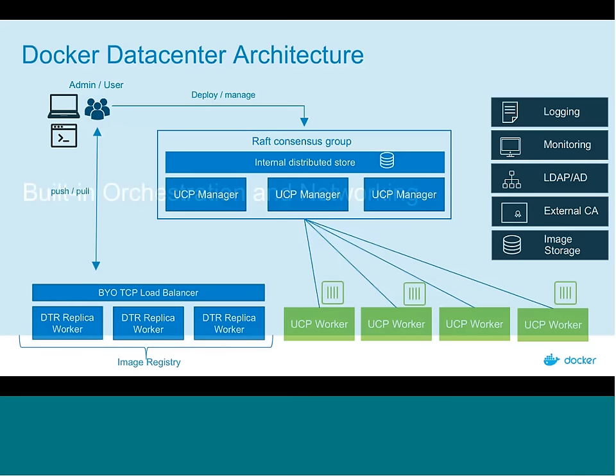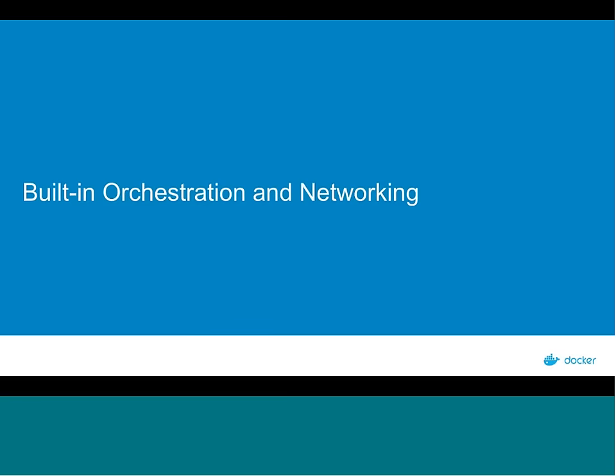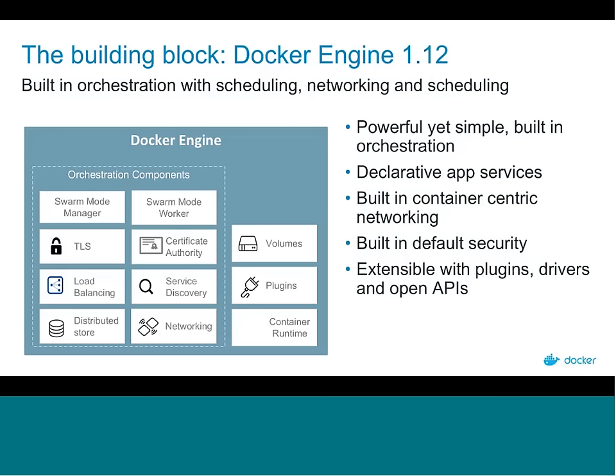The building block of the newest version of Docker Data Center is Docker Engine 1.12. Its biggest advantage is built-in orchestration with scheduling and networking — a simple built-in orchestration platform. You can start it on top of the Docker engine with a Docker swarm init command, and it creates a cluster for you. If you choose, you can then install UCP directly on top of it. The Docker engine provides declarative app services, built-in container-centric networking, built-in default security, and is extensible with various plugins, drivers, and the open Docker API.